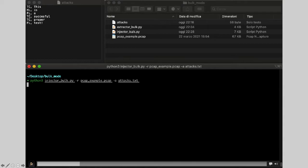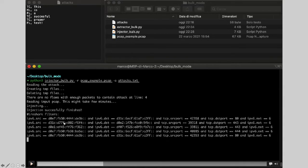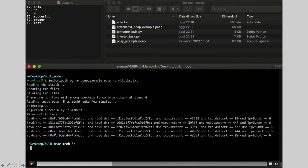In this case, pcapStego works in the same way. So, it parses the pcap file and it parses the attacks. Unfortunately, for the attack at line four, which is traffic class and successful attack, there are no flows with enough packets. So, this attack will be skipped.